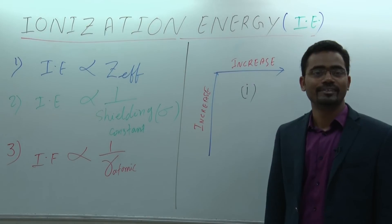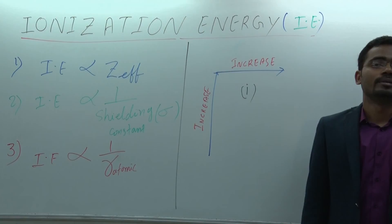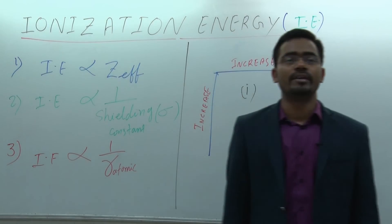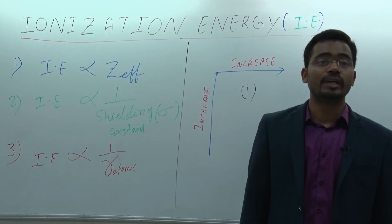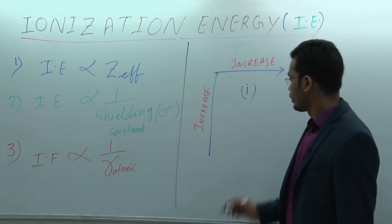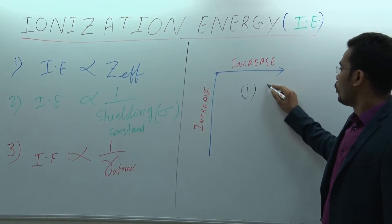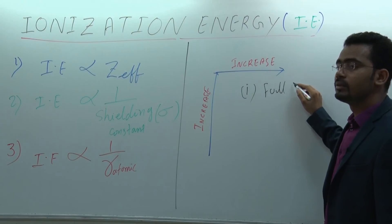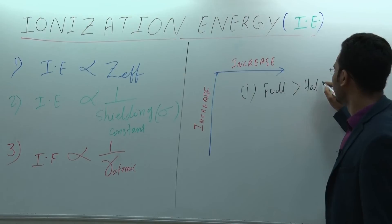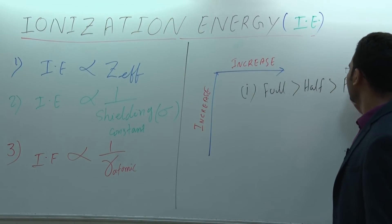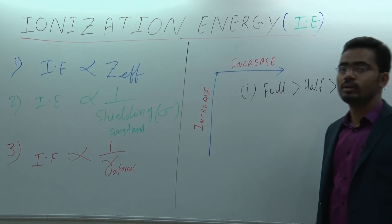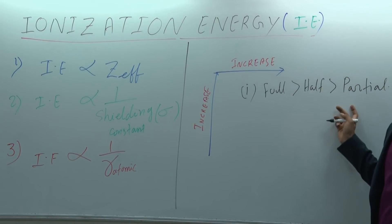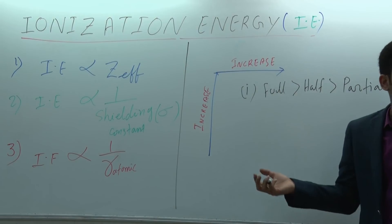What are the irregularities? Elements in the same period have the same shell but different orbitals. The order of stability is: fully filled orbitals have higher ionization energy than half-filled, and half-filled have higher ionization energy than partially filled. This is because fully and half-filled orbitals are more stable. Remember: full-filled > half-filled > partial-filled.